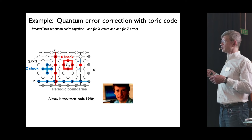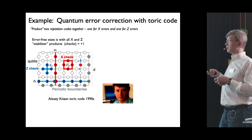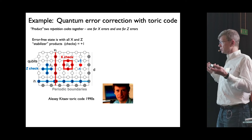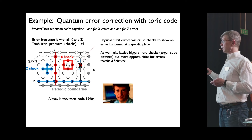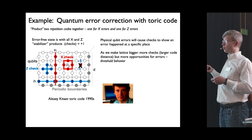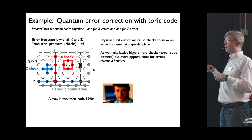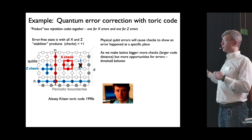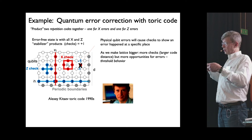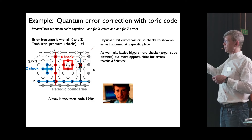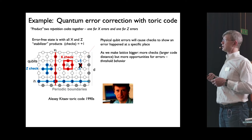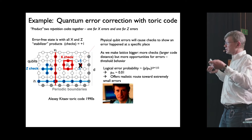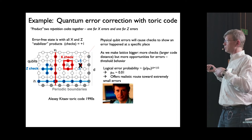In the toric code, you make stabilizer checks, and if all checks return plus one it means the state is good. If there is an error, it is detectable because some checks change sign to minus one, allowing you to detect and correct the error. What's interesting is that if you make the lattice bigger — increase the code distance — it has a threshold behavior: provided the error rate is below about one percent, with increasing code distance the errors decrease exponentially.